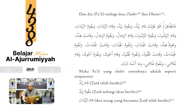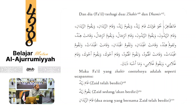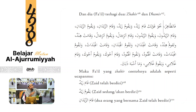Wa qamat al-hunudu - jama' taksir, fa'il al-hunudu tanda rafa'nya dommah. Wa qama akhuka - fa'il akhuka, tanda rafa'nya wau karena asma'ul khamsah. Wa qama ghulami - domanya disembunyikan. Dommah itu bisa dommah nampak, bisa juga disembunyikan.